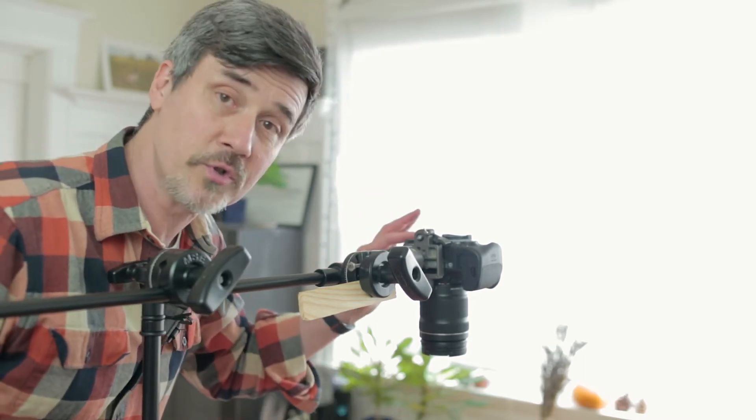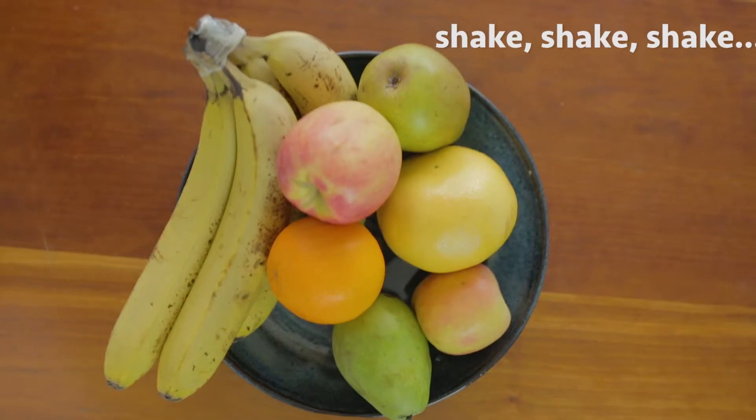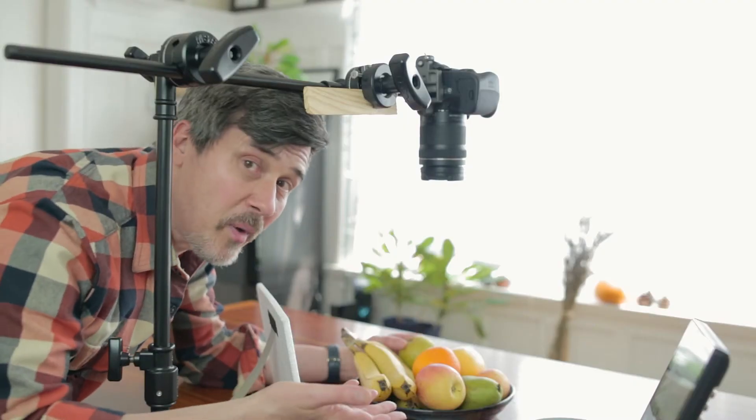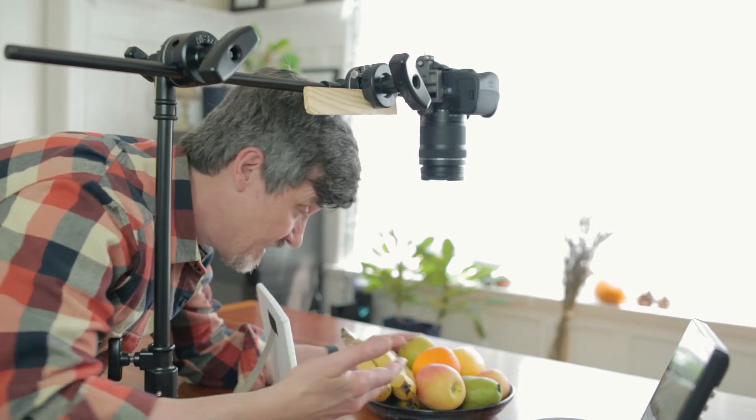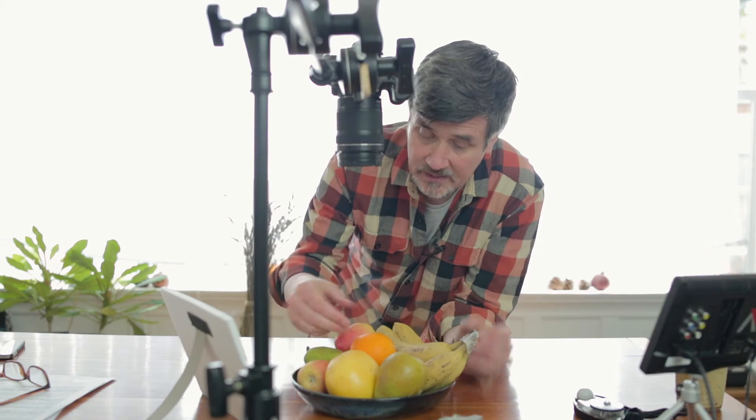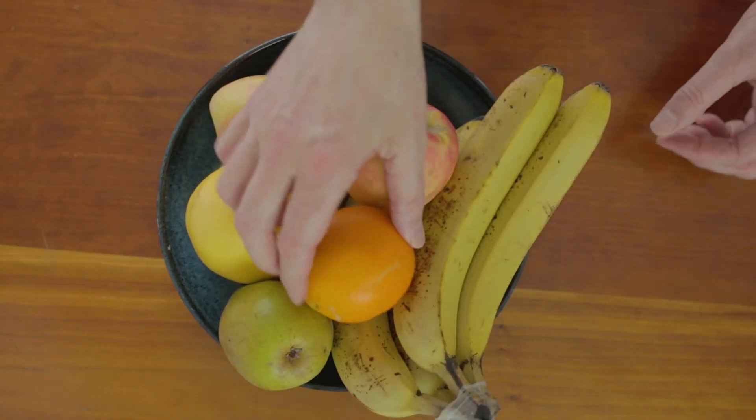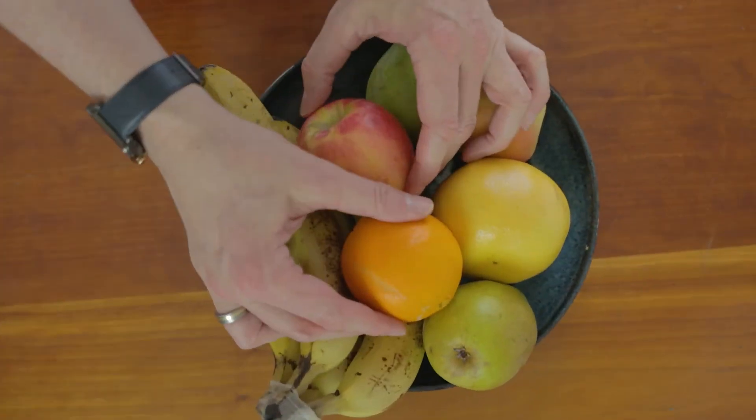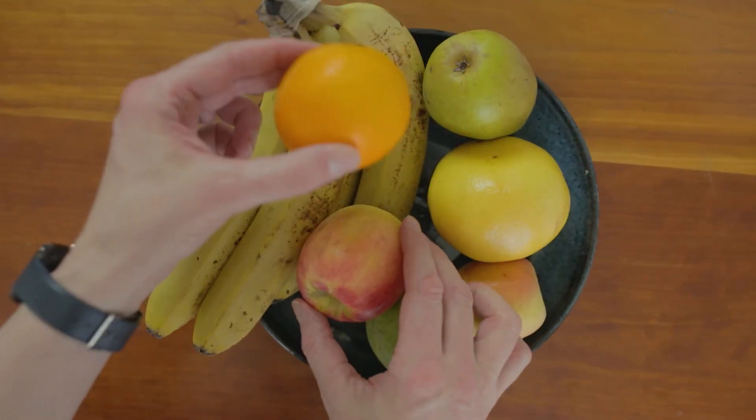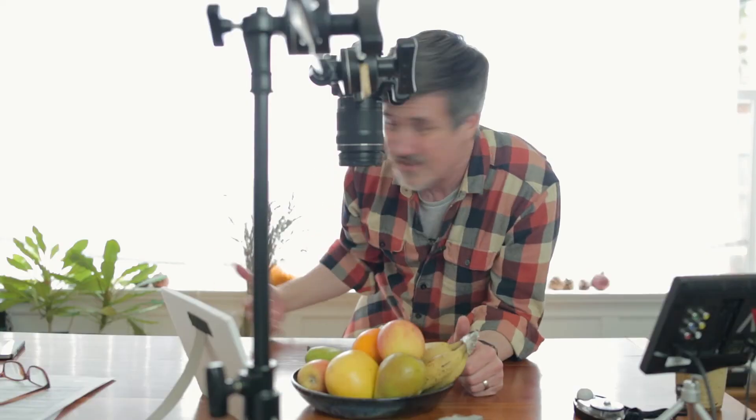But what if you need a little bit more room in the shot and the c-stand's getting in the way? You could work from the other side, but if you're doing a demo where you're actually in the shot, you'll have to reverse and flip your image in post. I guess that's fine, but also, as you can see here, I'm kind of standing in my light.